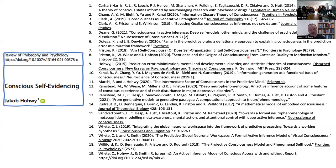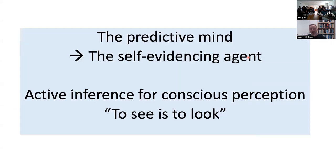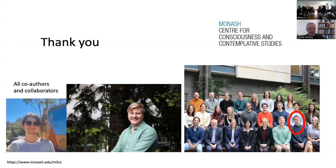There are now many papers from many different people beginning to speak to the idea that active inference is of importance to consciousness. My own line on this is in a paper called 'Conscious Self-Evidencing.' Overall, the predictive minds idea has evolved toward a self-evidencing agent framework, and I've tried to give reasons to take seriously that active inference can throw light on conscious perception under the slogan that to see is to look. Thank you to co-authors Chris, Jonathan, Lars, and the whole group here.